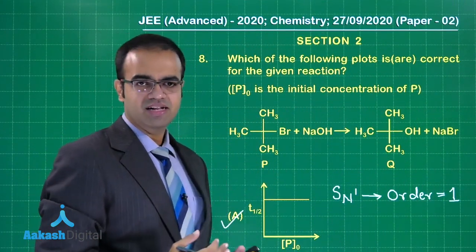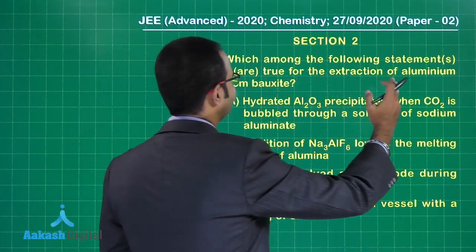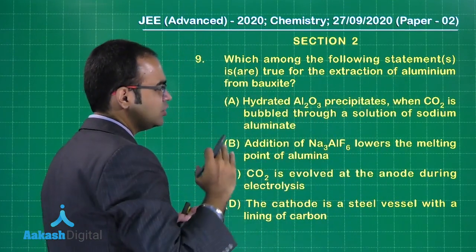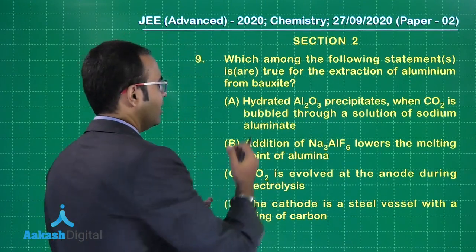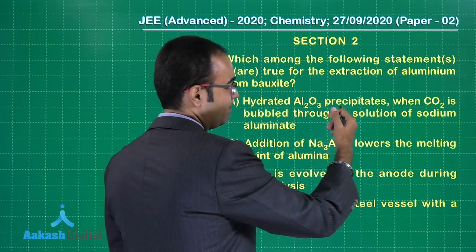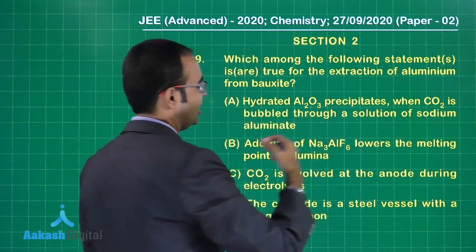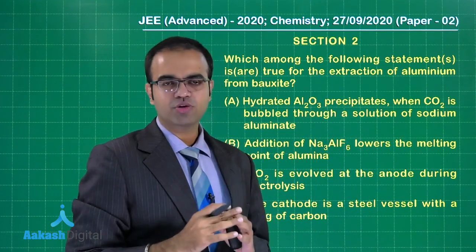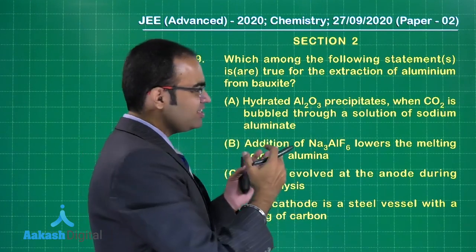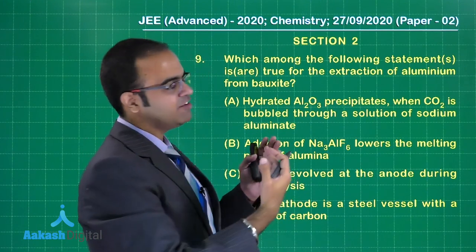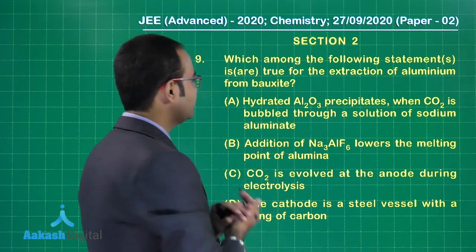Let us move on to question number nine: which among the following statements is/are true for extraction of aluminum from bauxite? Option A: hydrated Al₂O₃ precipitates when CO₂ is bubbled through a solution of sodium aluminate. If we bubble CO₂ through sodium aluminate, it gives back Al₂O₃ and sodium bicarbonate. Option A is correct.